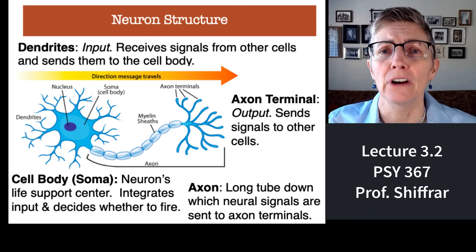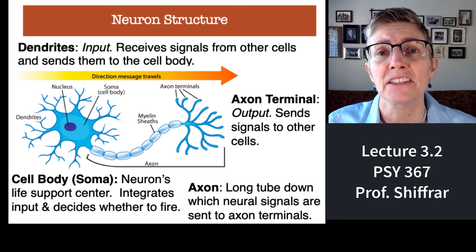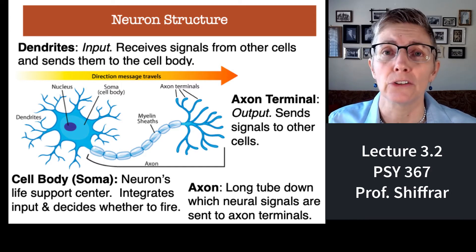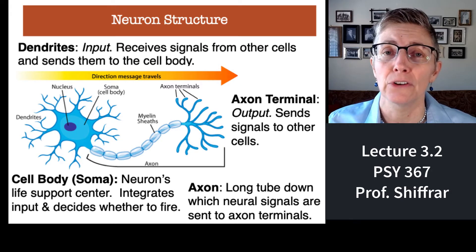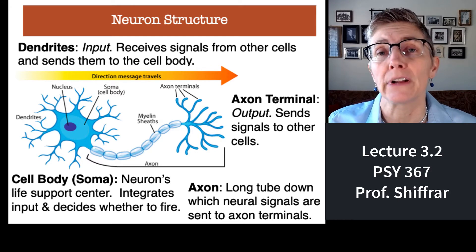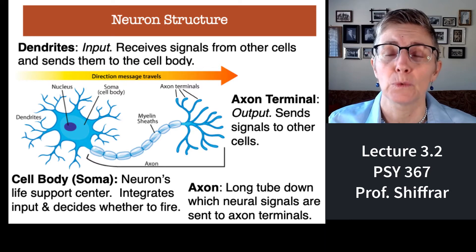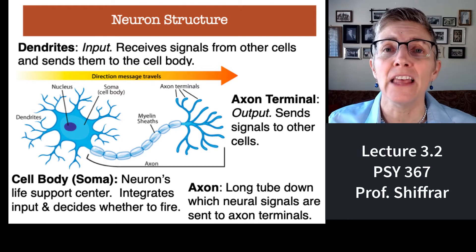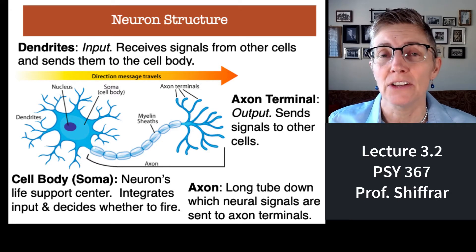Now what's the structure of a neuron? Let's go through it briefly. The input to a neuron is the dendrites. Dendrites receive information from neighboring neurons. The information that comes into the dendrites is brought together and considered in the cell body of the neuron, or the soma. If the cell body decides that there's enough stimulation coming in from neighboring neurons, then that neuron is going to fire an action potential, which is an electrical current, down the length of its axon until it gets to the axon terminals.